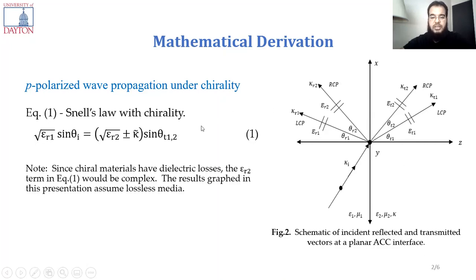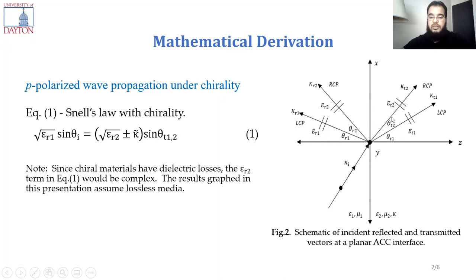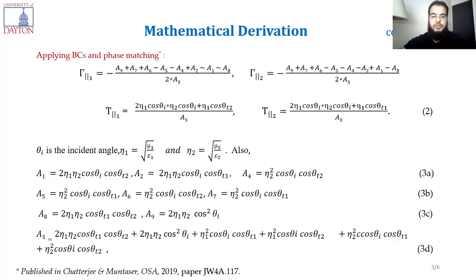As we know, the chiral material is usually a lossy material, so the relative permittivity in the second boundary, which is the slab, will be complex. But here in these slides we are showing the lossless case. The lossy graphs and results will be introduced in the paper.